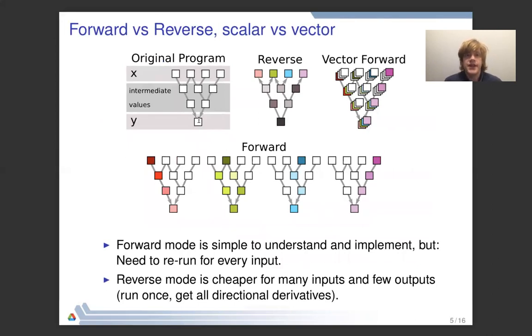Now the main modes of AD are forward and reverse mode and in this slide I'm trying to illustrate the difference between those. In the top left corner here we see an original program that's just a very small example of what a program could look like. This one takes an input vector x with four indices and it produces an output scalar y and it has some intermediate values here. What it does is it uses some operations that are defined in the language itself, operators like plus minus or intrinsic functions like sine cosine to consume inputs, produce intermediate values, then consume those, produce maybe another intermediate value before finally coming up with a final result.